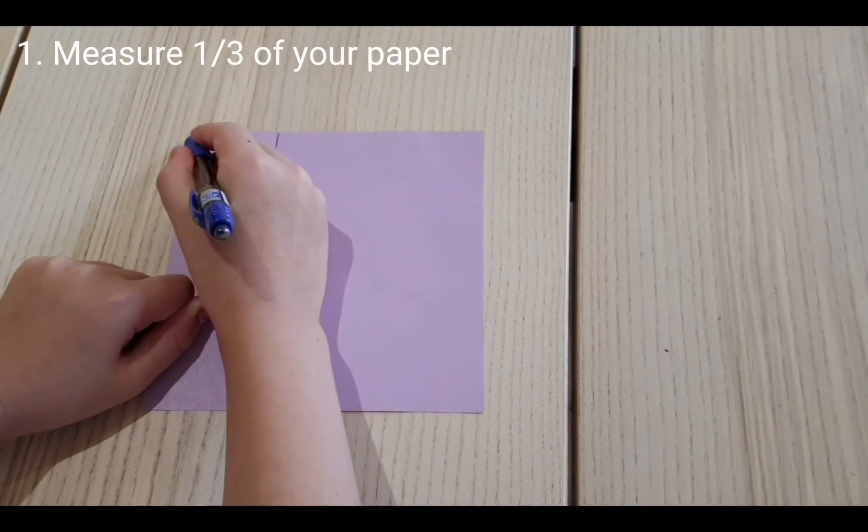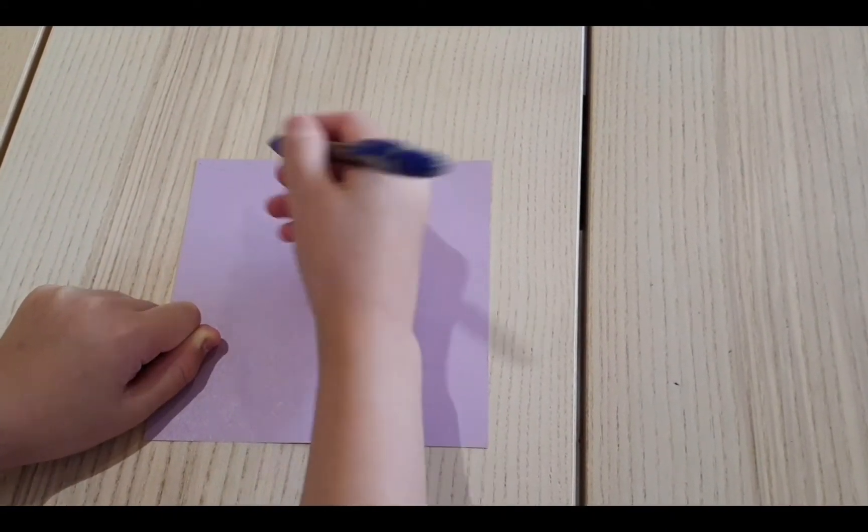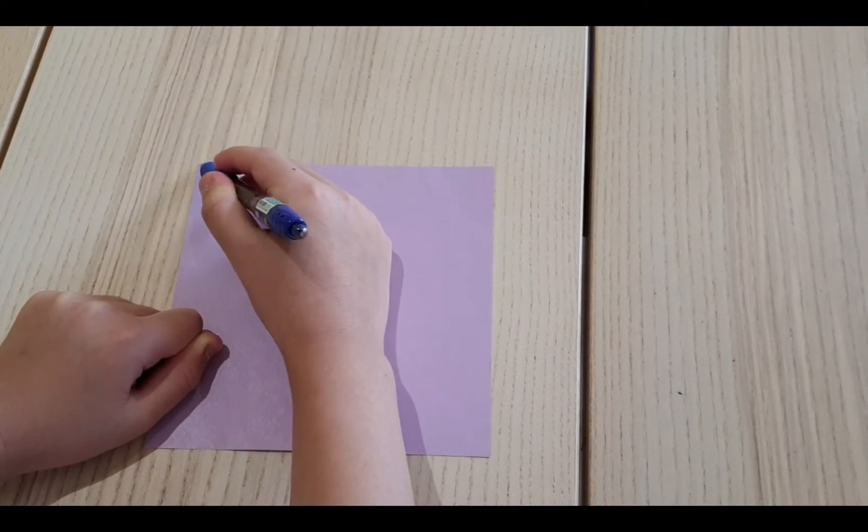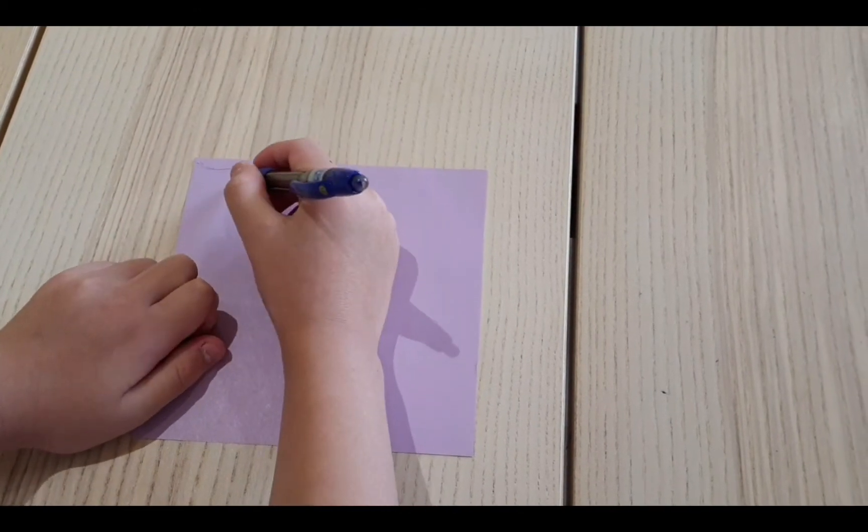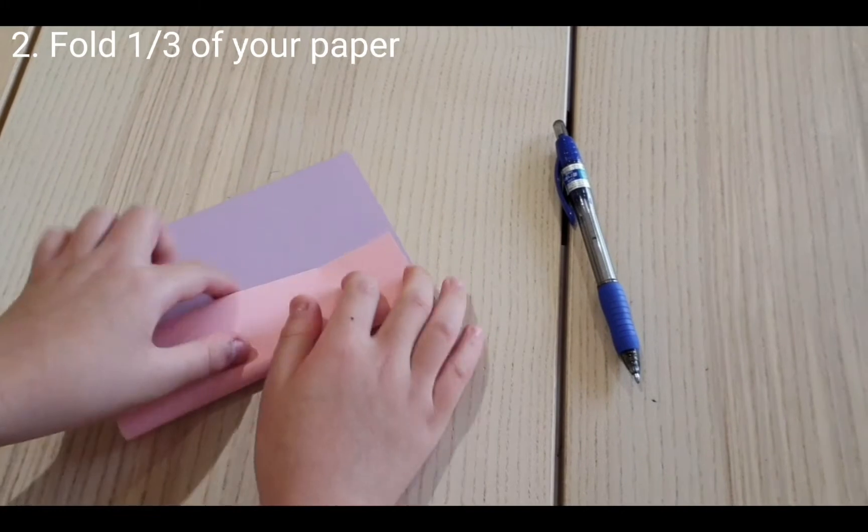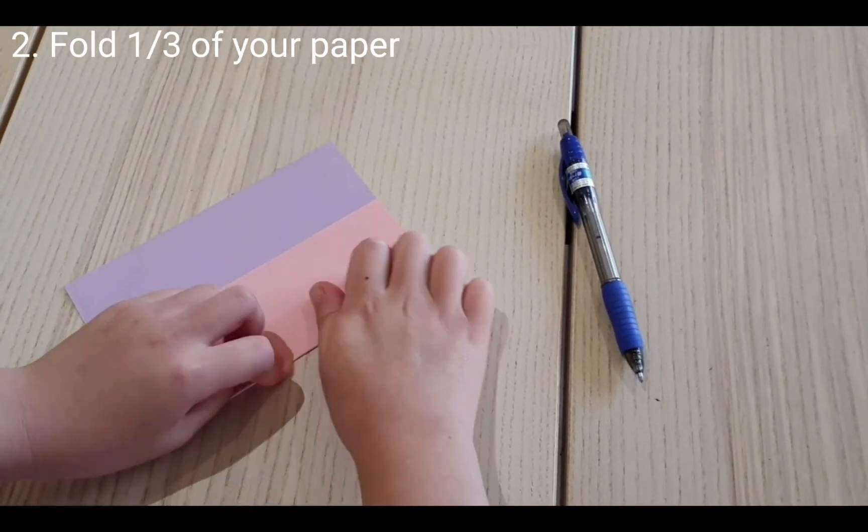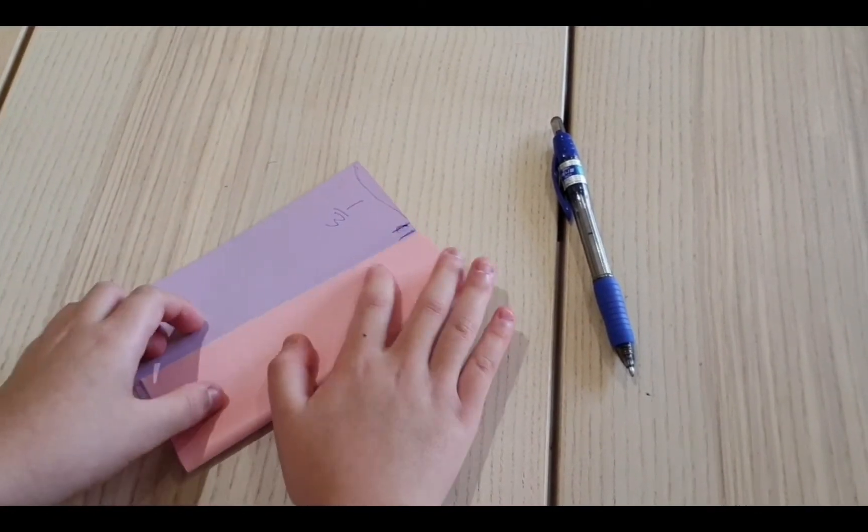So the first step is to measure a third of your paper. I'm making it with thin paper right now, but like I said, I recommend thick ones since it makes the game way easier and faster. Next, you fold it one-third.